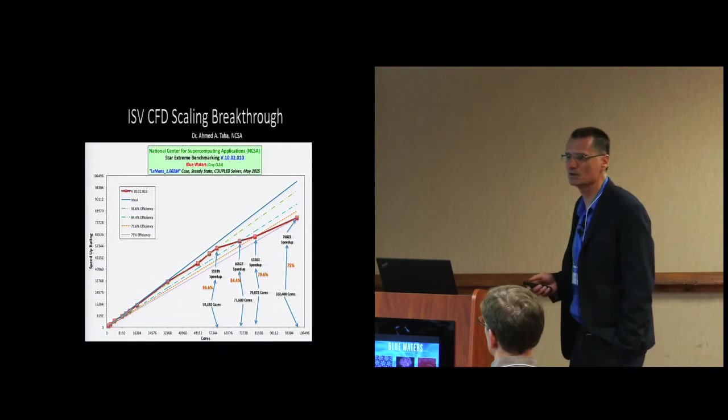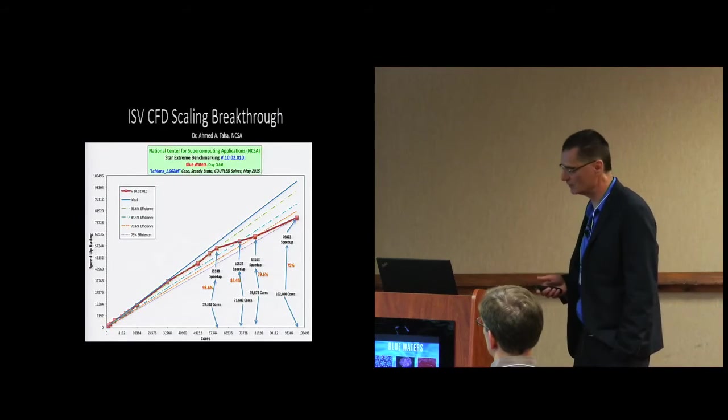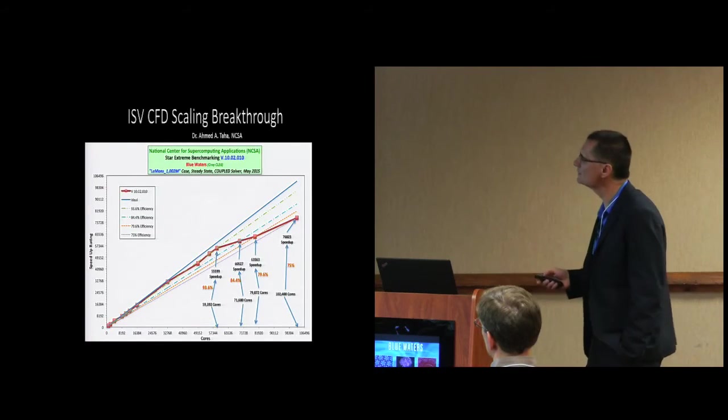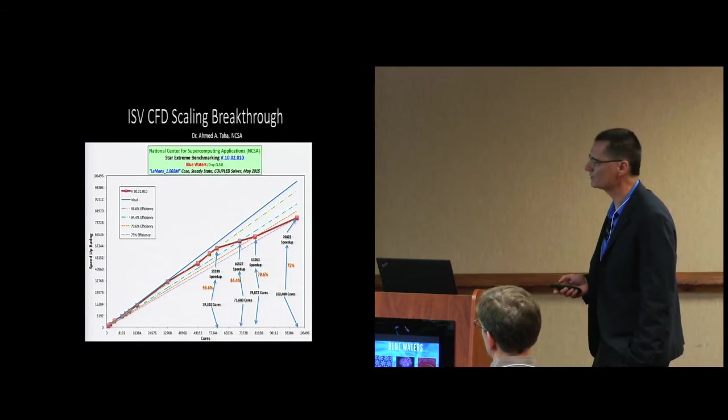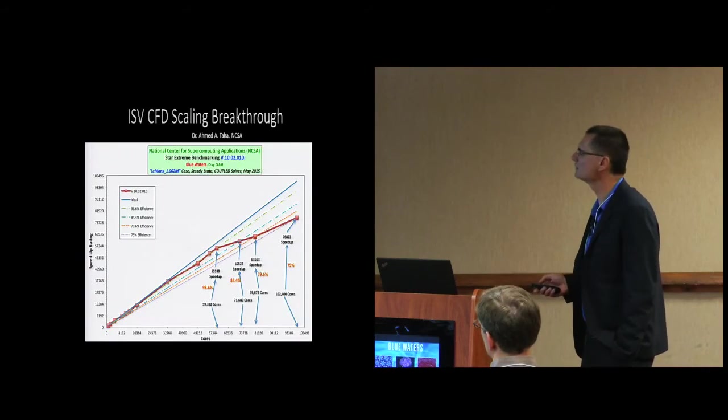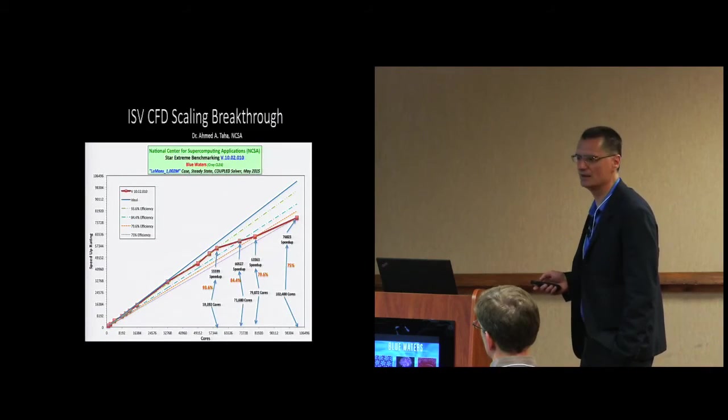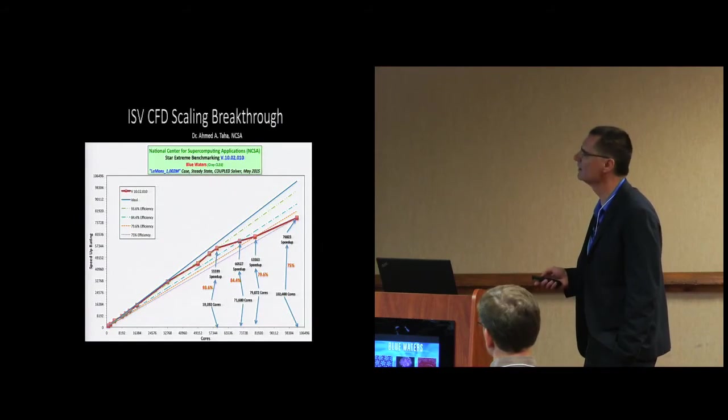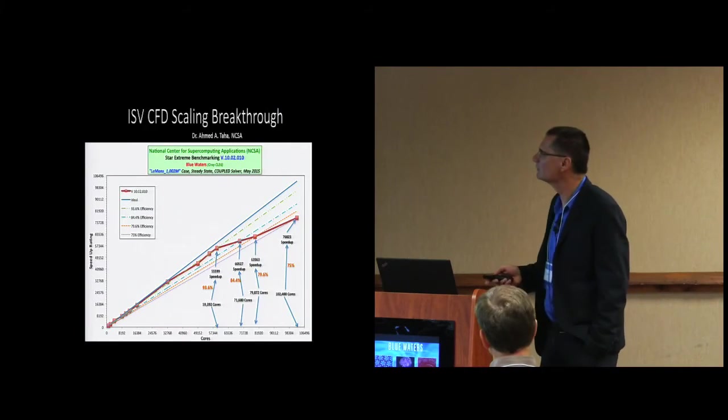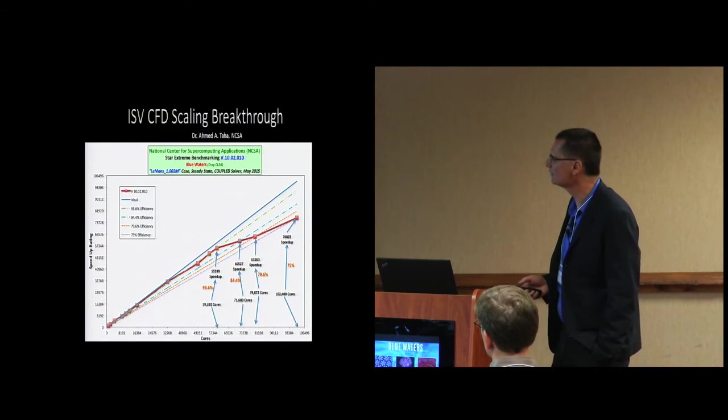This is one I mentioned just a few days ago. My colleague, Dr. Ahmed Taha, who is in charge for the CFD operations at NCSA, worked with Star CCM, with CD-Adapco and their flagship code. He broke 100,000 cores right now with 76,000 speed up, which brings us to efficiency of about 75%. This is a benchmark provided by the ISV. They're doing lots of business with Formula One in Europe. This was an aerodynamics problem with turbulent flow around one of the bullets. Very big problem size, almost 1 billion nodes. We scaled to 100,000 cores.